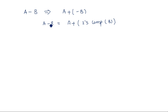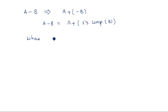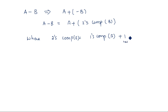That negative number can be converted into a positive number by taking the two's complement of B. So A minus B can be written as A plus minus B, which equals A plus the two's complement of B. Two's complement is nothing but one's complement plus one. The two's complement of any number is a negative number, so two's complement of B is minus B, which accomplishes the A minus B operation.